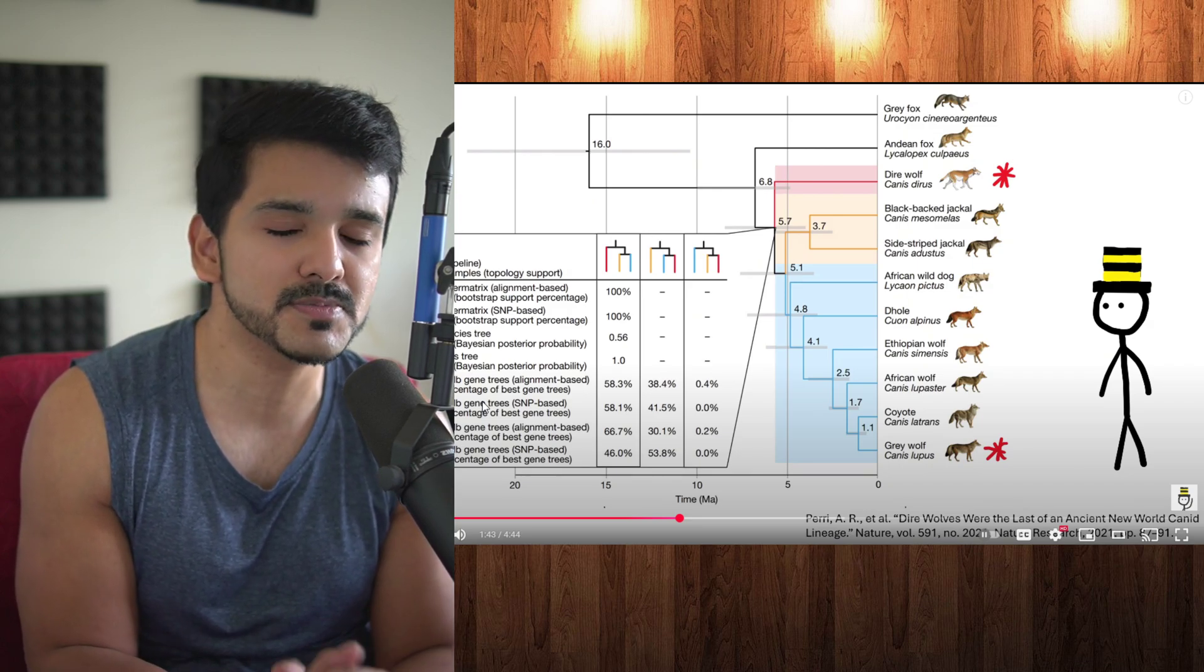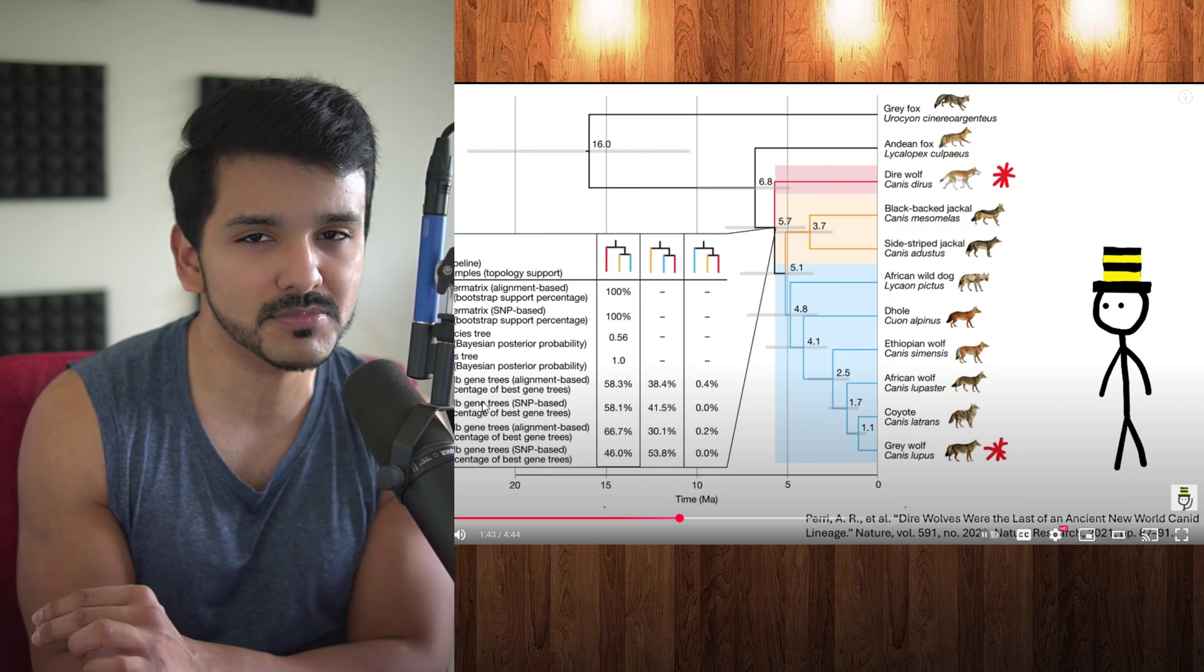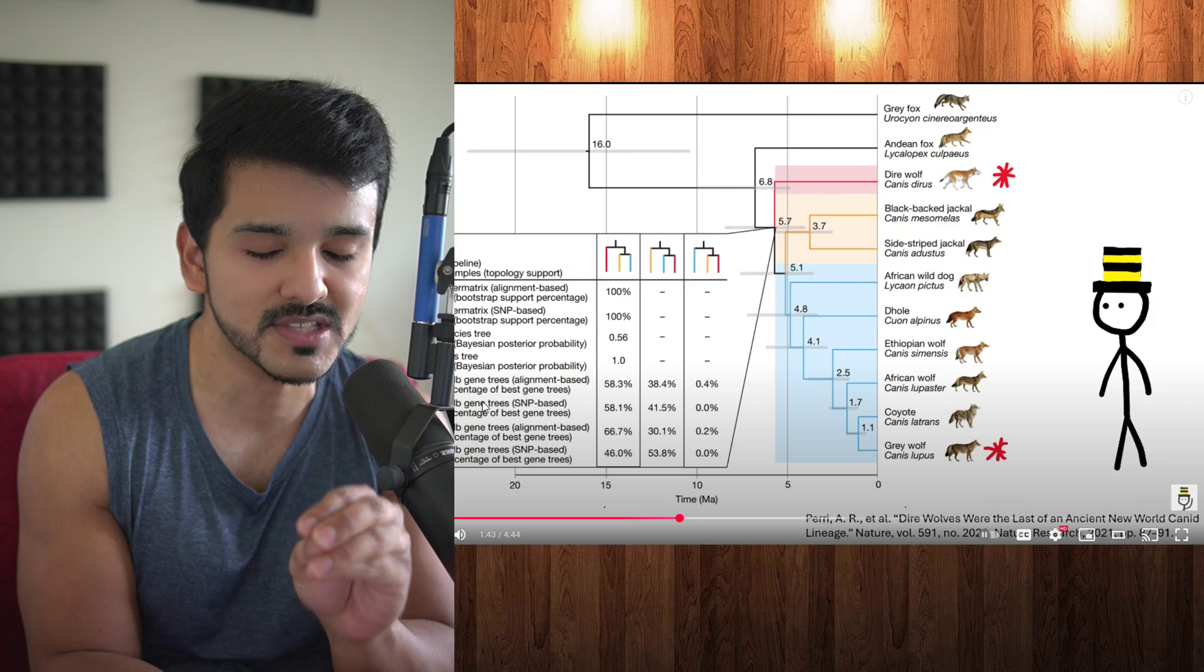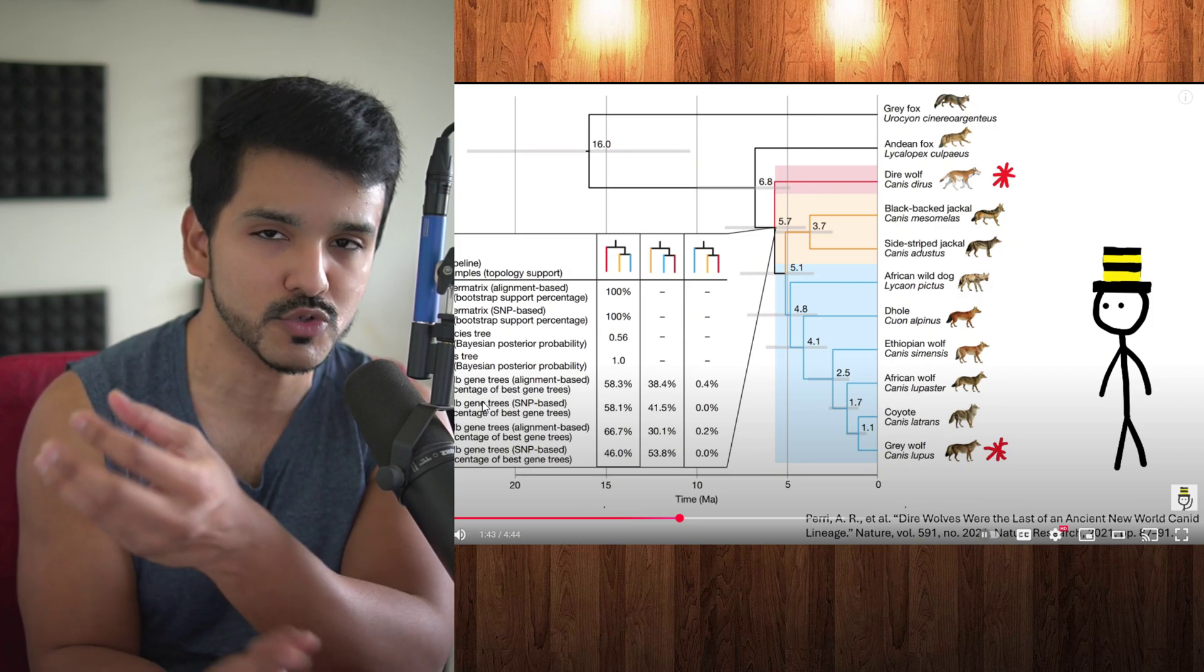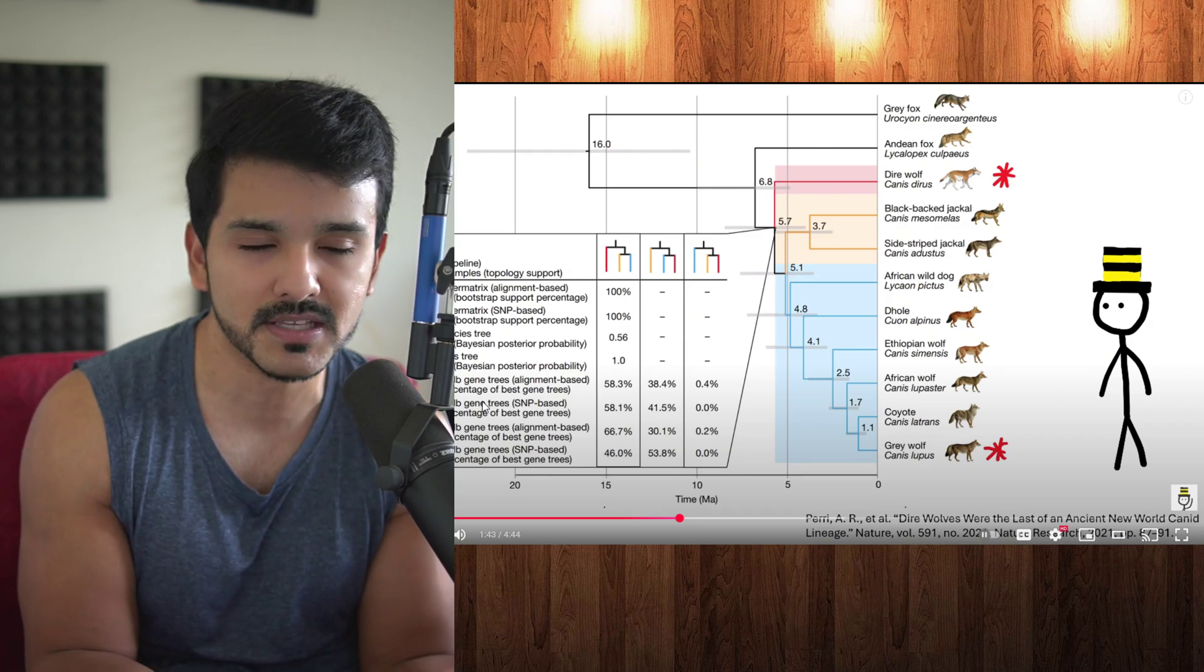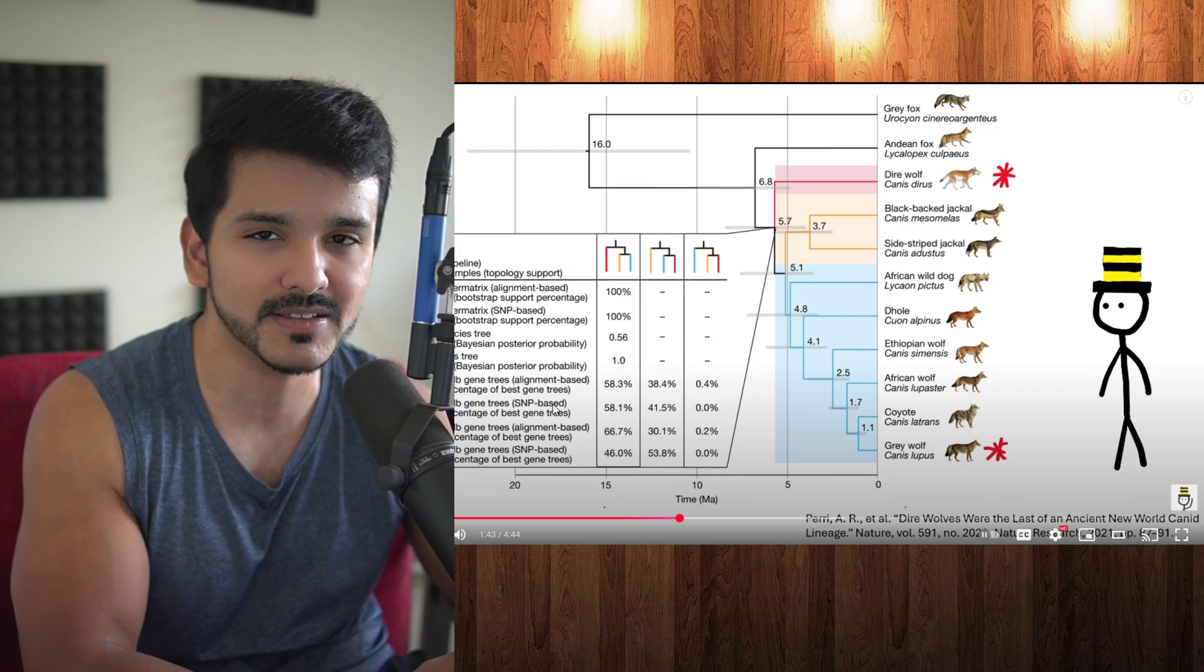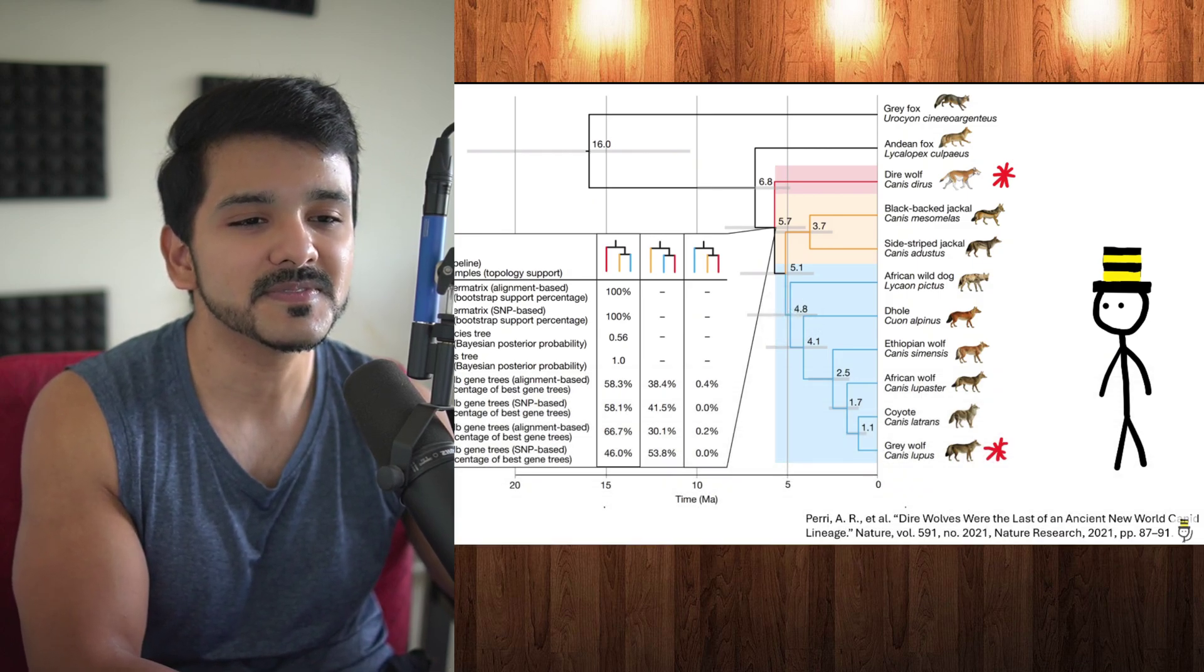This becomes a philosophical question: if you make something and edit it to be identical to something, is it the same thing? Evolution didn't make it. If you use direwolf DNA and insert it in something, you still took something made from evolution and tried to replicate it, like a clone. But if you just edited it, is that the same thing? It's like the GMO thing.